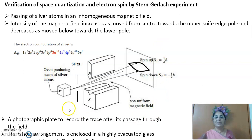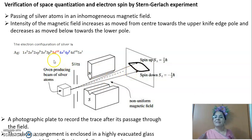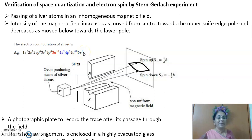This is the experimental setup that both scientists used. This is the oven in which silver is heated. From the oven, through the slits, a thin beam of silver atoms comes out. Silver's electronic configuration has 47 electrons. Out of 47 electrons, 46 are paired and the 5s¹ electron alone is unpaired. So the entire properties of silver are due to this unpaired electron in the 5s¹ shell.